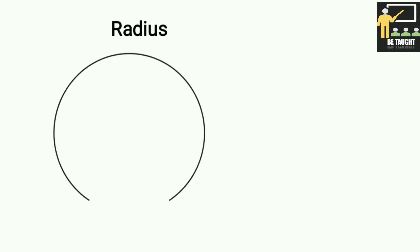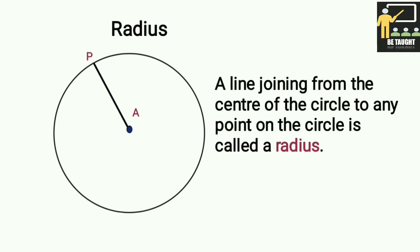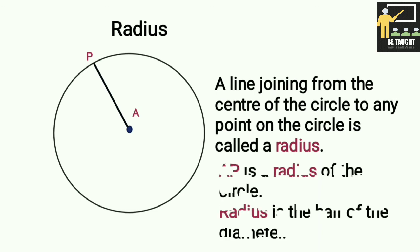Radius: A line joining from the center of the circle to any point on the circle is called a radius. Here, AP is the radius of the circle. The radius is half of the diameter.